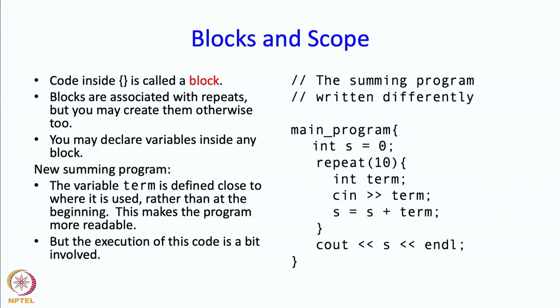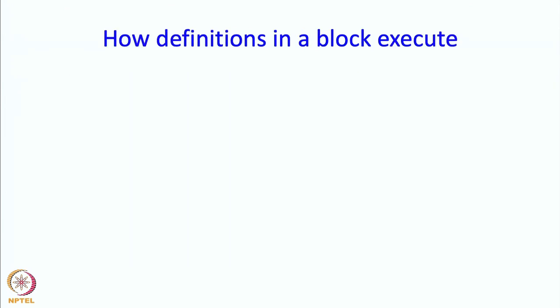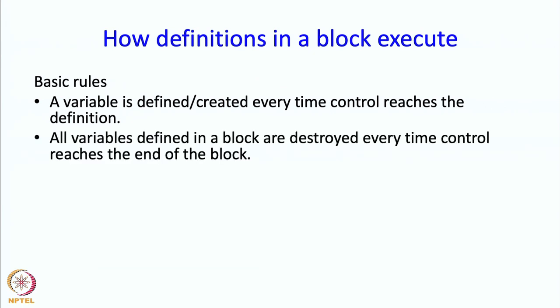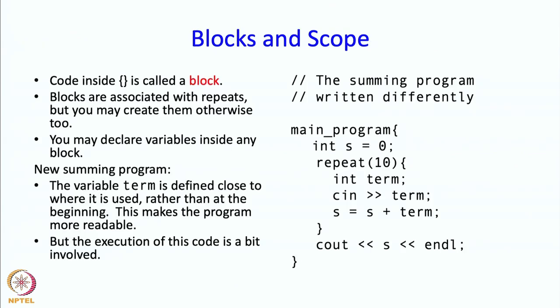But the execution of this code is a little bit tricky. A variable defined inside a block will get created every time control reaches the definition. Then all variables defined in the block are destroyed every time control reaches the end of the block. This term variable will get created at this point and then destroyed again at this point.